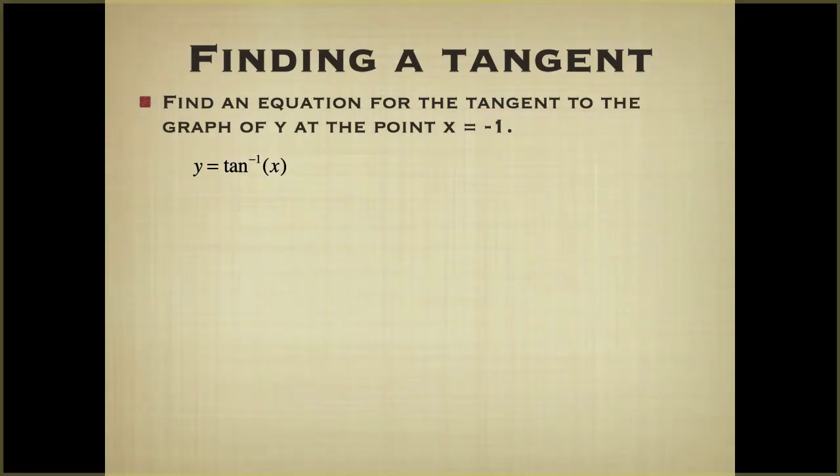So when we plug in negative 1 for x, we get y equals tangent inverse of negative 1. And when you do this on your calculator, you get negative 0.785. So we have a point.